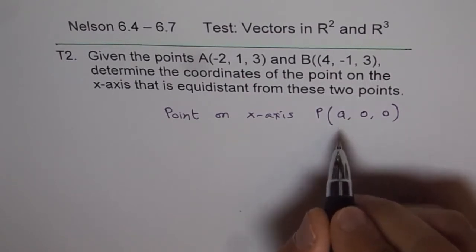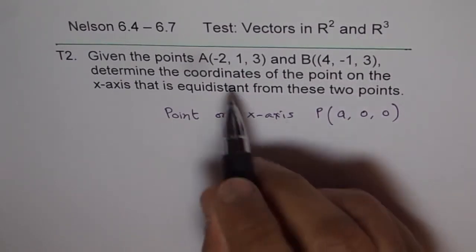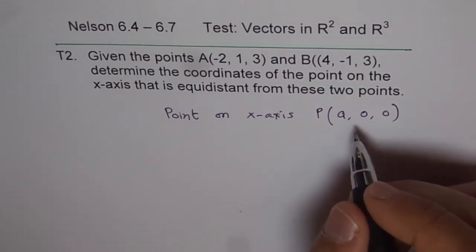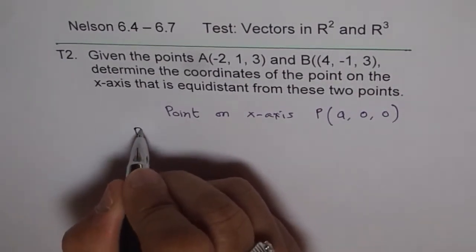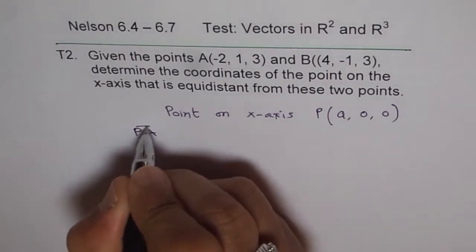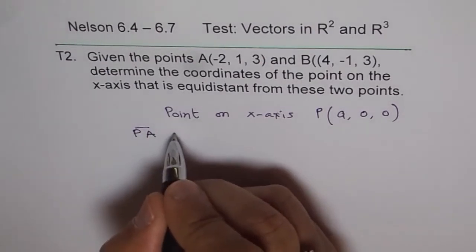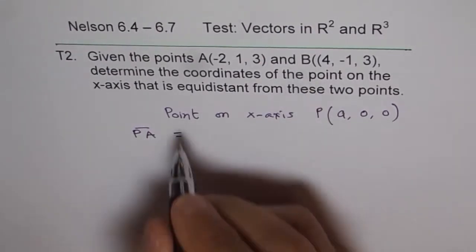Now, we want this point so that it should be equidistance from A and B. That means what we really are looking for is P to A is equal to, so equidistance, we'll say distance, is equal to P to B.